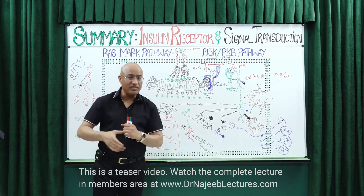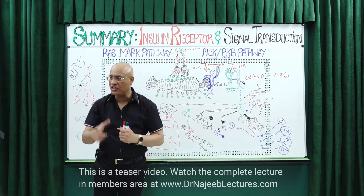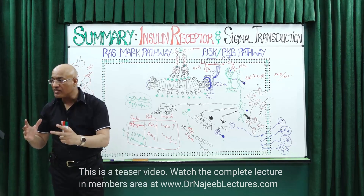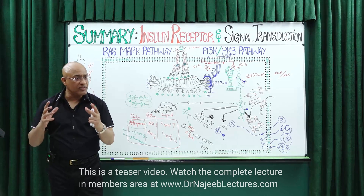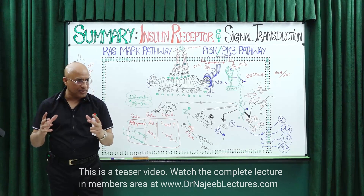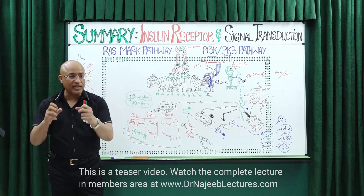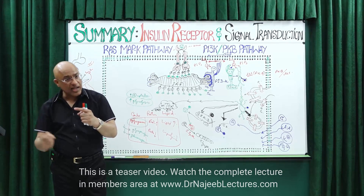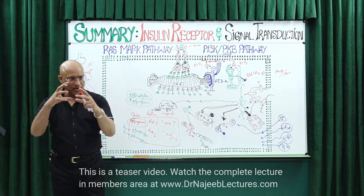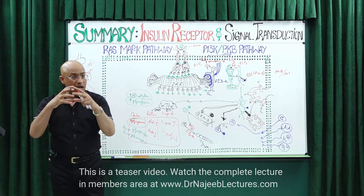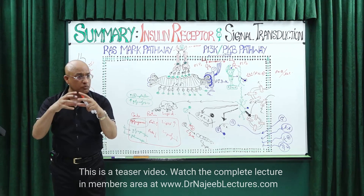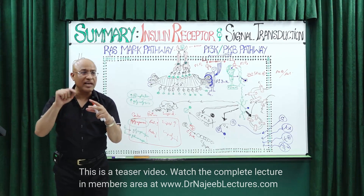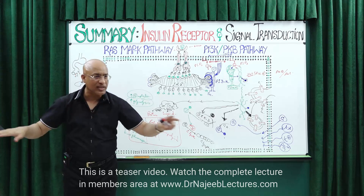Every cell has an inherent machinery to commit suicide. Within our cells, there are special proteins and enzymes. If they are activated, they will destroy our own DNA. Almost every cell has special molecular machinery — if that is activated, the cell will commit suicide.